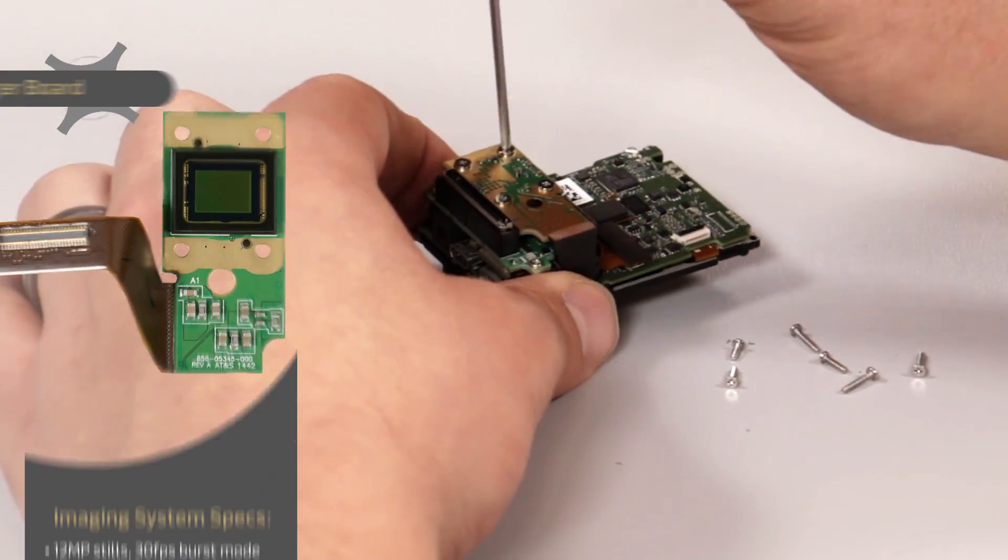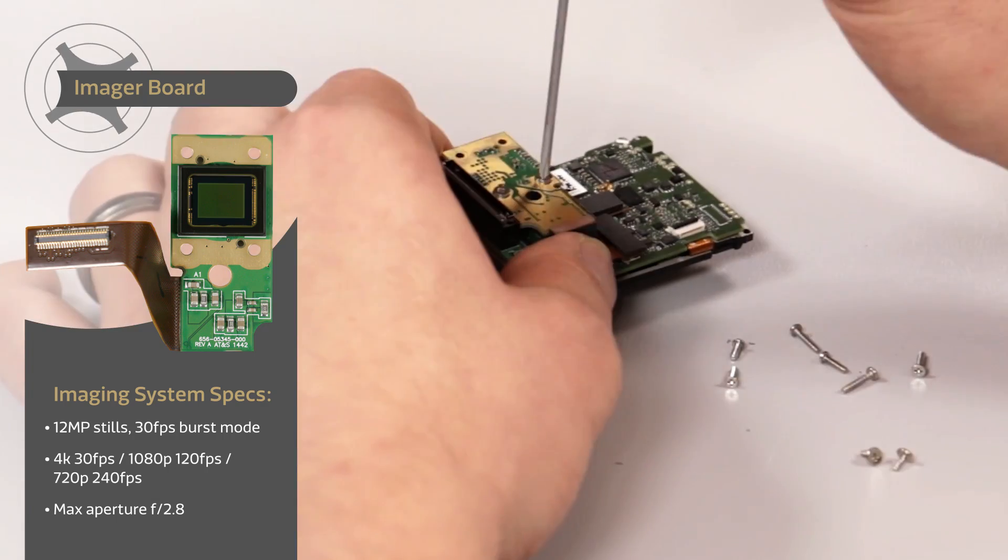With the camera clear, you can now remove the imager board by removing the four screws and prying up the attached ribbon cable.